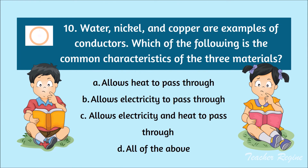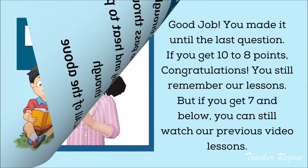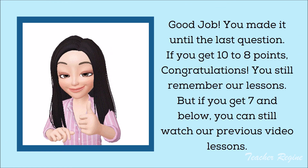Number 10. Water, nickel, and copper are examples of conductors. Which of the following is the common characteristic of the three materials? A. Allows heat to pass through, B. Allows electricity to pass through, C. Allows electricity and heat to pass through, D. Allows electricity and heat to pass through. The correct answer is letter D. Good job! You made it until the last question. If you get 10 to 8 points, congratulations! You still remember our lessons. But if you get 7 and below, you can still watch our previous video lessons.